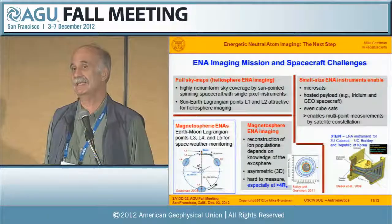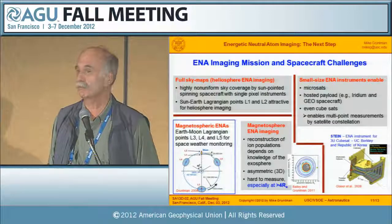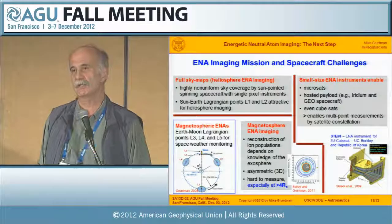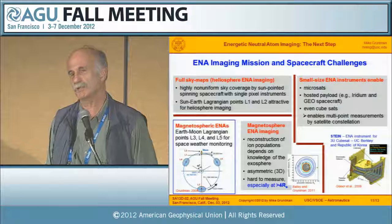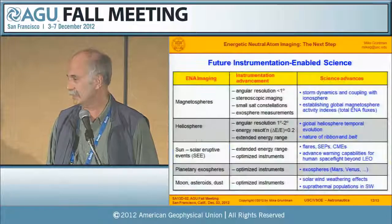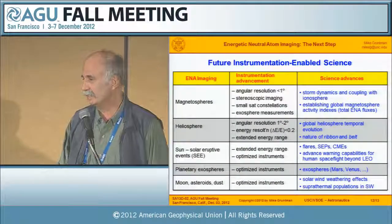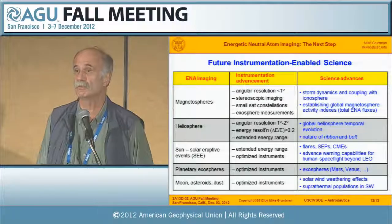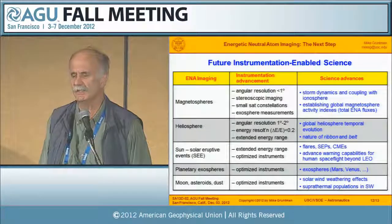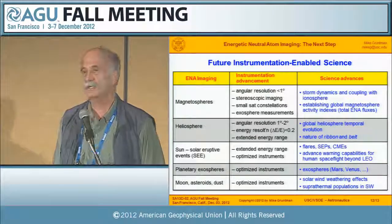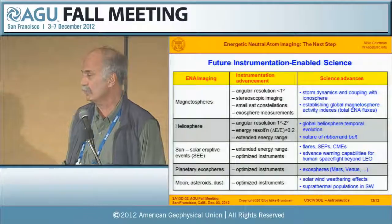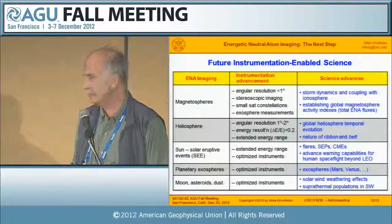Putting ENA instruments on small spacecraft allows multipoint measurements, such as a constellation of CubeSats — the first example is UC Berkeley flying such an instrument on a CubeSat. But optimizing such constellations is a new and difficult challenge. Looking ahead, in the magnetospheres we need angular resolution better than 1 degree, in the heliosphere perhaps 1 to 2 degrees. For solar eruptive events, extending the energy range may open a way to advanced warning capabilities for human spaceflight beyond LEO — which is very important.